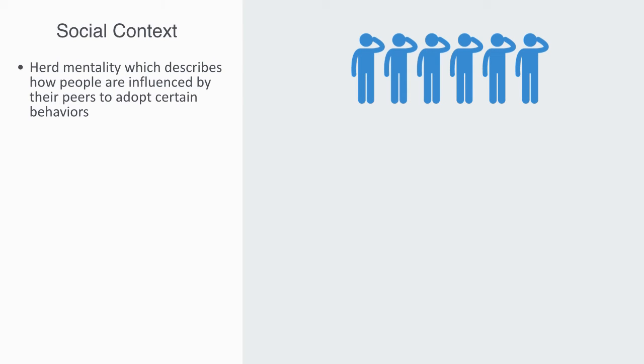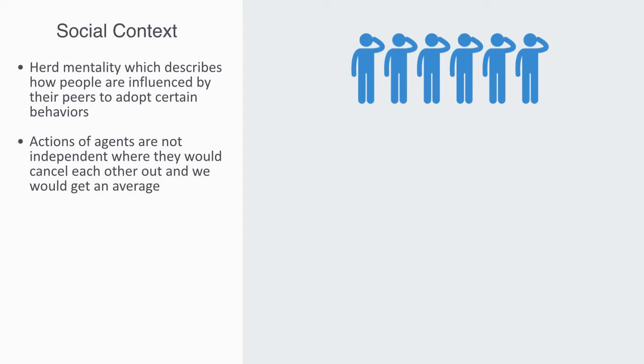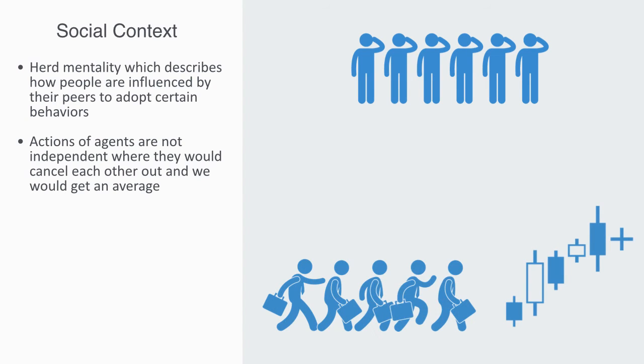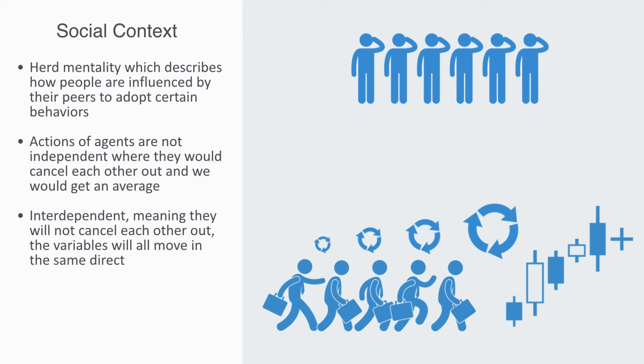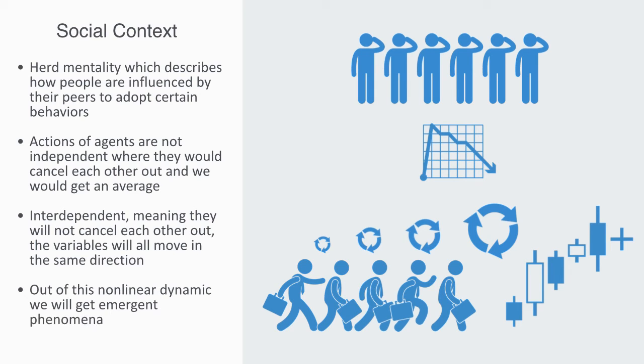Meaning, the actions of agents, are not independent. Where they would cancel each other out, and we would get an average. But in fact, in this situation, they are interdependent. Meaning, they will not cancel each other out. The variables, will all move in the same direction. Out of this non-linear dynamic, we will get emergent phenomena. Such as, stock market bubbles. Which cannot be accounted for, using linear models, that simply aggregate over isolated rational agents.